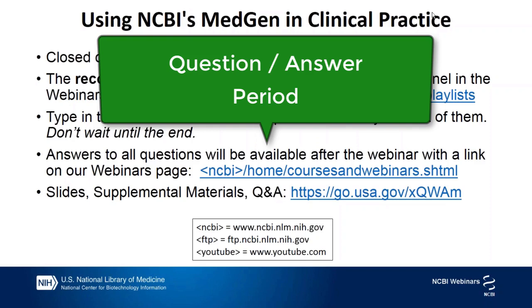Another question is: does MedGen use an ontology like SNOMED CT? Yes — SNOMED CT is what we select as our preferred names, so we have the SNOMED CT preferred name as well as the identifiers. Jennifer Lee asks: could eFetch be enabled for MedGen? Hopefully yes — it is a matter of getting the resources to do it. But could it be enabled? Yes, in the future. Thank you for that suggestion, it will definitely go on the list.